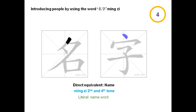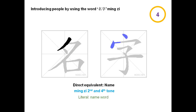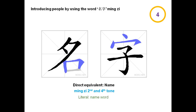Now let's have a look at the word 名字, spoken in the second and fourth tone. It literally means name-word: 名 means name, and 字 means word, but the direct English equivalent is simply name.